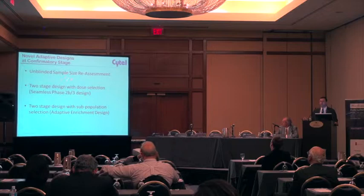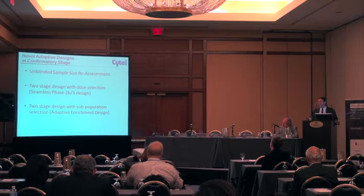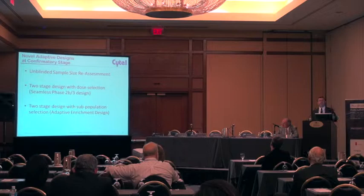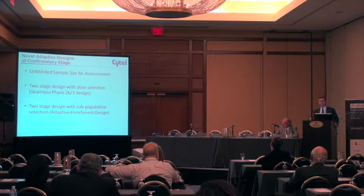Third: two-stage design with subpopulation selection. This is a more novel design that came a little later than the first two. Here you still don't know if your subpopulation is really sufficiently better than the whole population in terms of efficacy, so you are giving yourself another shot and I will describe exactly how to do that in phase three by making the decision at an interim analysis.